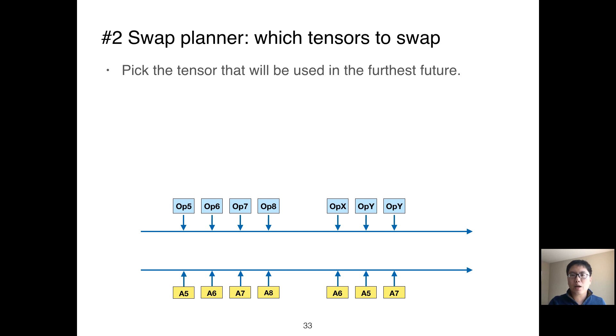Offspring can be created by the genetic algorithm. The swap planner can decide which tensor to swap. The swap planner scans through the given schedule, and when there is not enough memory for creating a tensor, it has to pick an in-memory tensor to swap out. Which tensor should we choose? It is intuitive to pick the tensor that will be used in the furthest future. This gives us more time to swap it back.